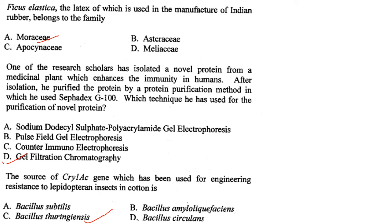The source of the CRI-1 AC gene used for engineering resistance to lepidopteran insects in cotton is Bacillus thuringiensis — that is Bt cotton.